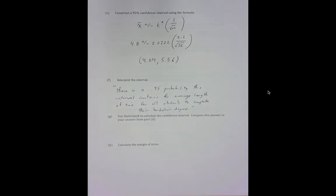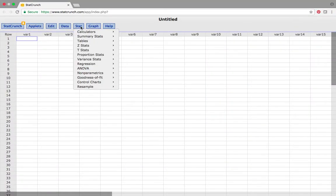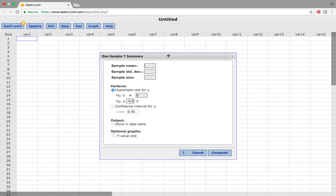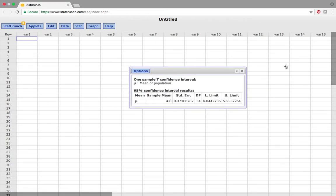Use StatCrunch to calculate the confidence interval. Where do we go? Stat, T-stat, One sample, Summary, because we do not have our data. We have a summary. We've got our mean and our standard deviation given to us. So the mean is 4.8, the standard deviation is 2.2, sample size is 35, confidence interval is 0.95. And you will see that we get the same answer.